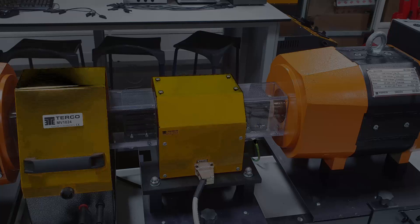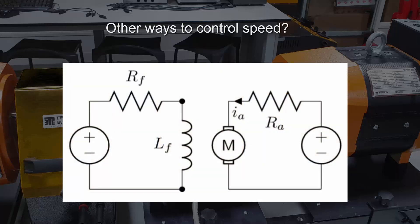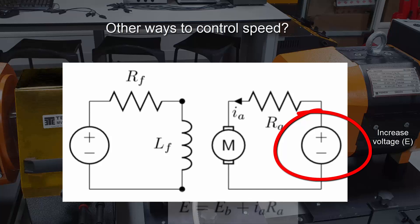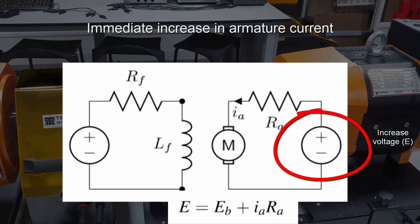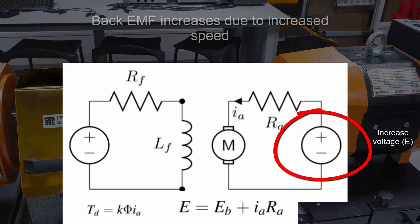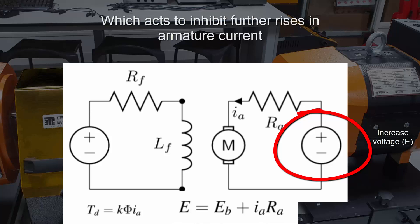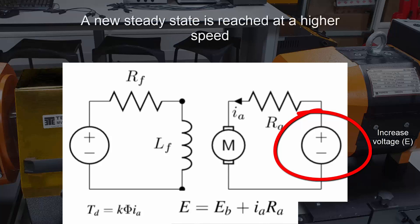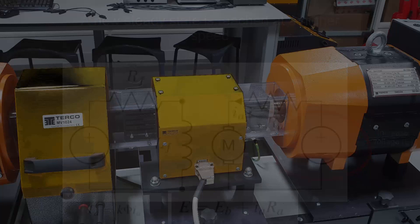Now are there any other ways that we can control the speed of the separately excited DC motor? What happens if we increase the supply voltage to the armature? Well, the back EMF will need to increase to maintain the balance in the equation. So when the supply voltage is increased, there will be an immediate increase in armature current, which will lead to an increase in torque. The increased torque will cause the motor to speed up, which will actually increase the back EMF. This reduces the current until a new steady state is reached, but that new steady state will be at a higher operating speed. So we can see now that the armature voltage is another way to control the speed of the motor.